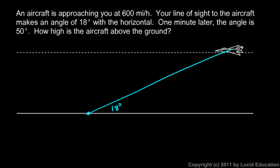Then it says one minute later the angle is 50 degrees. So one minute later the plane has moved over to another location, and at that point your line of sight makes 50 degrees. So this is 18 and this whole angle is 50 degrees. You're told to find how high the aircraft is off the ground, so the height h right here is what we're looking for.